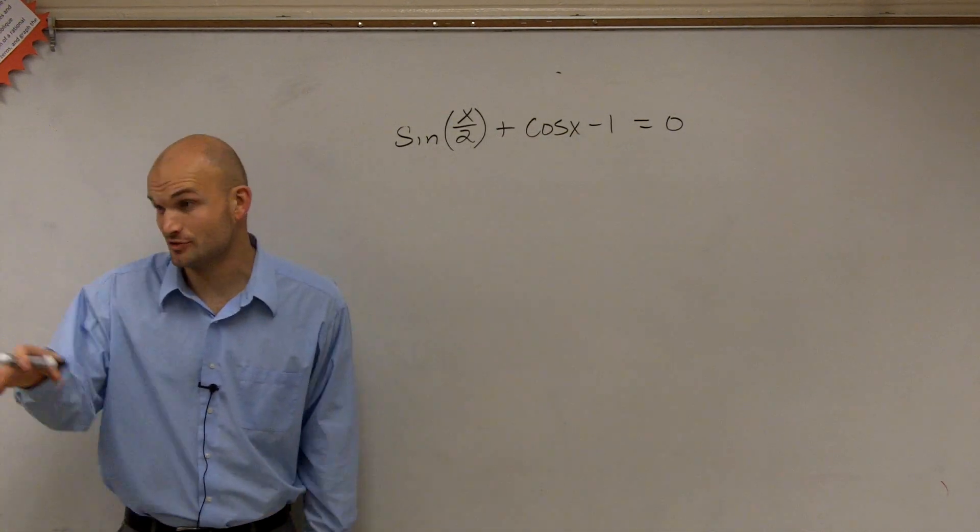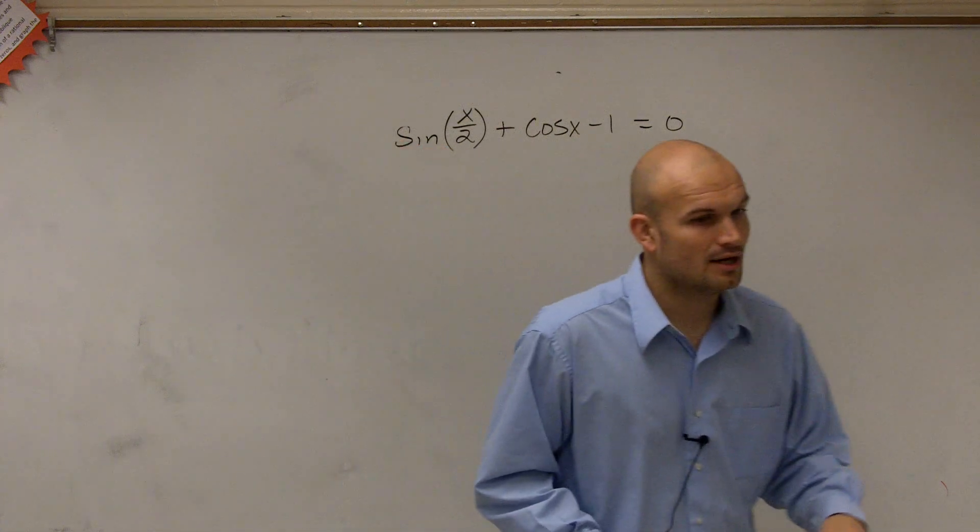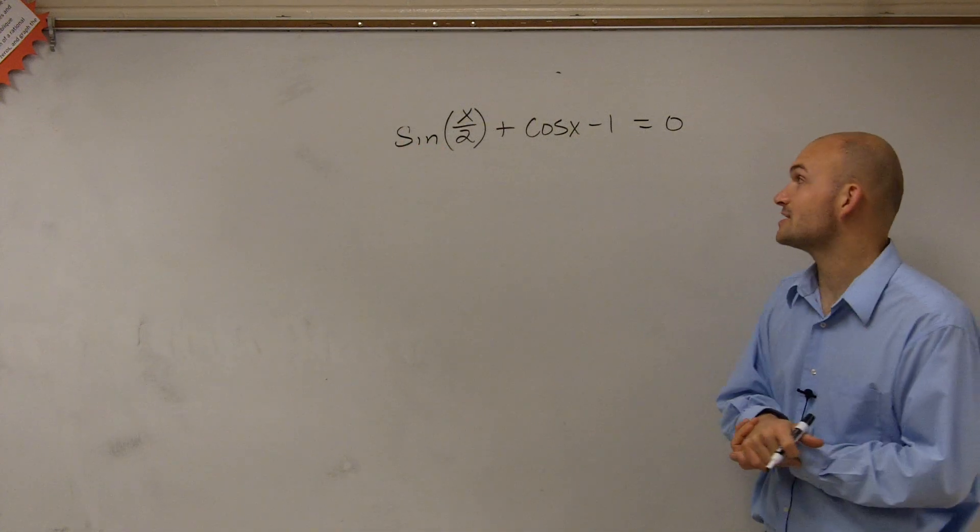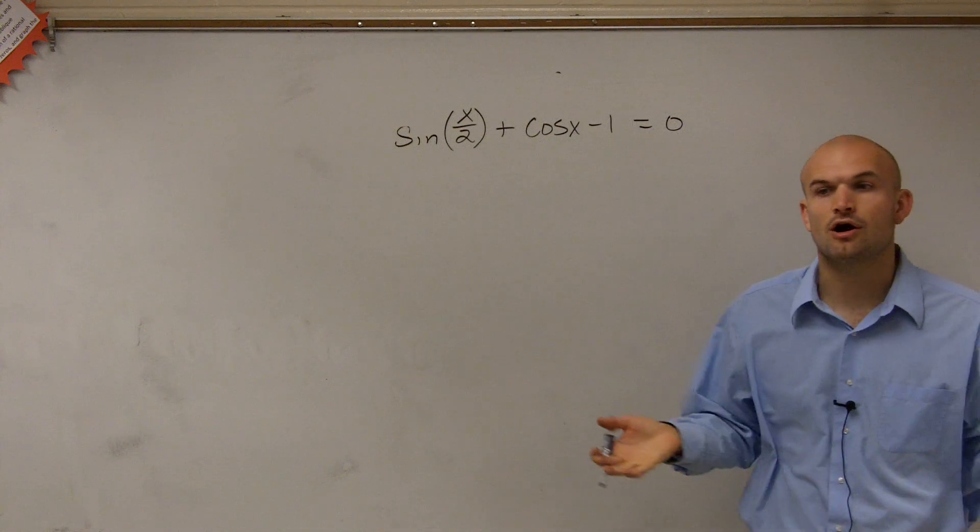All right, so we have sine of x divided by 2. This one's going to be in the homework quiz, so it's a good one. So we have sine of x divided by 2 plus cosine of x minus 1. And what they want us to do is they want us to solve, right?